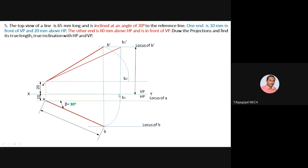Now A-dash B-dash is made parallel to XY as A-dash B2-dash. Extend the projector from B2-dash to locus of B to find the corresponding point B2. Join A and B2 — this is the true length in the top view.